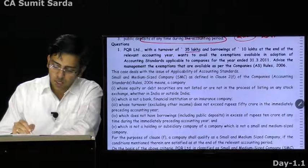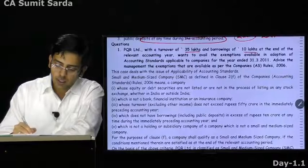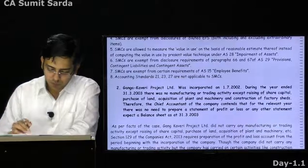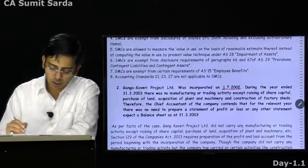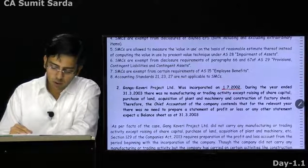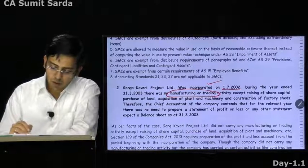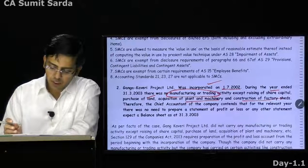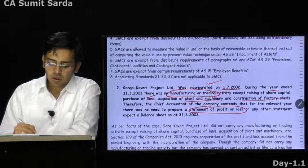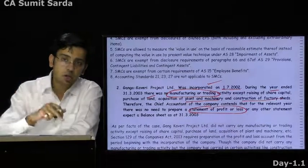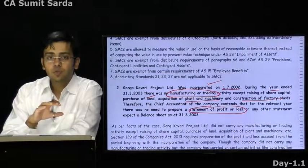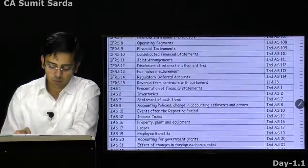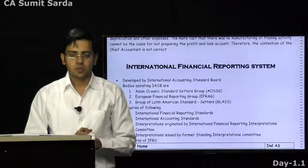PQR Limited has a turnover of 35 lakhs and borrowings of 10 lakh rupees at the end of the relevant year and wants to avail the exemptions available. We have already seen the list of exemptions. Next question: Ganga Kaveri project was incorporated on 1st July 2002. During the year ending 31st March 2003, there was no manufacturing and trading activity except raising share capital, purchasing land, acquisition of machinery, and construction of factory. The chief accountant contends that there is no need to prepare a statement of P&L. But if you are supposed to carry out a commercial activity, no one is saying the activity should have started — since you are incorporated, you are required to comply with the standards and prepare all such statements.